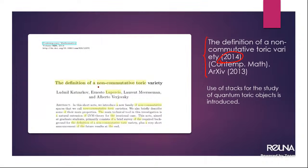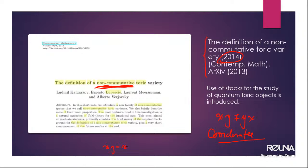The reference I'm using is a 2014 paper where we described and proved some basic properties of the theory. Back then we used to call them non-commutative toric varieties. But this was confusing — in quantum theory, xy is not yx for the coordinates, unlike in commutative algebra and classical algebraic geometry.